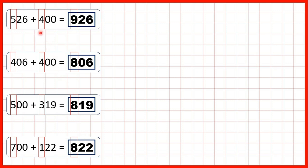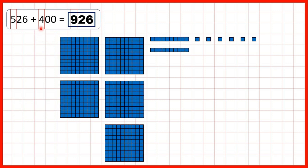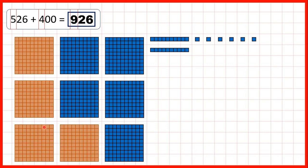Now let's take a closer look at these questions. First we started with 526 — that's five hundreds, two tens and six ones. Adding 400 means we can add four hundreds blocks, and now you can see that we have nine hundreds blocks altogether, but we still have our two tens and our six ones, so those digits are the same as in the number we started with.